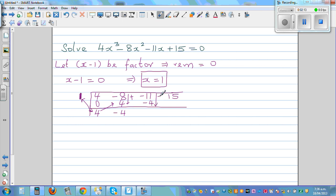You add these two numbers, which is negative 15. And multiply these two numbers, which is negative 15 and 0. So 0 means the remainder is 0. When you divided this polynomial by x minus 1, the remainder is 0.